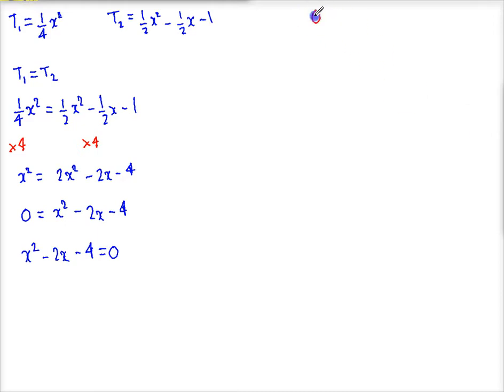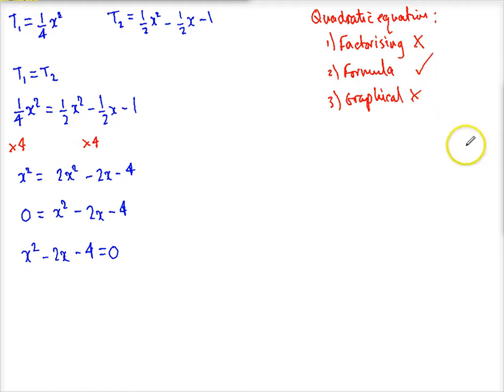Well, we know that this is a quadratic equation. And there's a number of ways to solve quadratic equations. You can solve them by factorizing. You can solve them by the formula. You can solve them by using a graphical method. Now, in this case, that's out. And that's too annoying. So we're going to use this. And actually, you get the formula at the beginning of the formula sheet. You get x is equal to minus b plus or minus the square root of b squared minus 4ac, all divided by 2a.